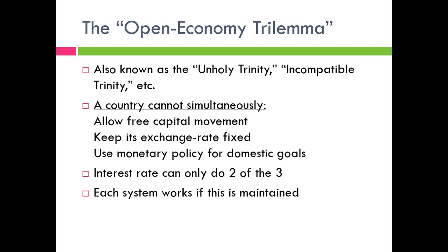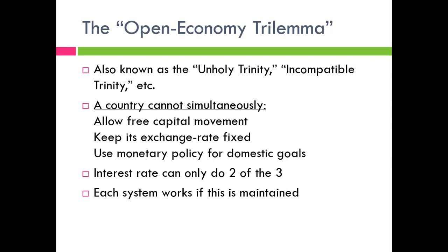If you keep the rules and keep the system going, then it works — but eventually it will fall apart. The IRP equation states: home interest rate equals foreign interest rate plus the appreciation of the foreign currency.